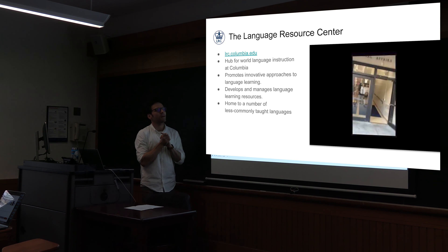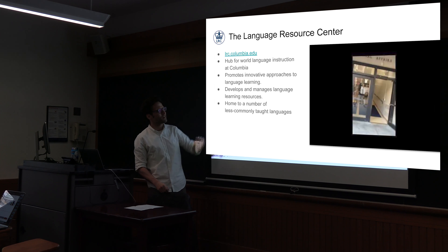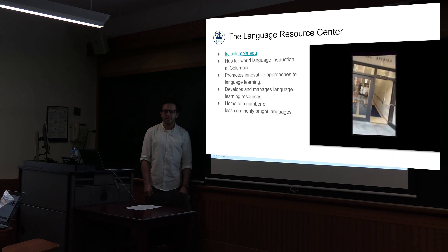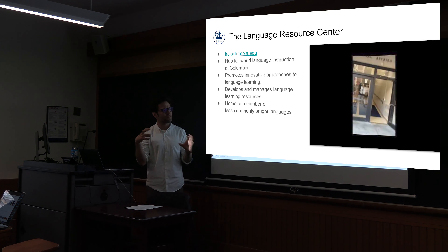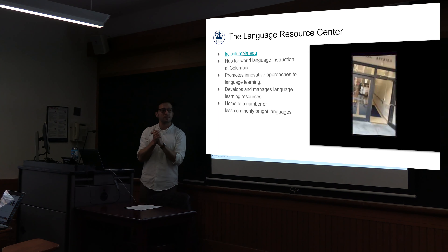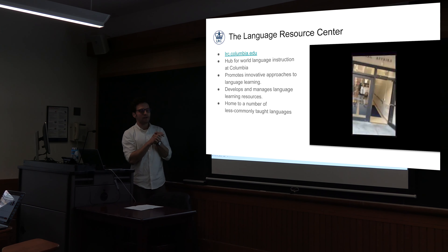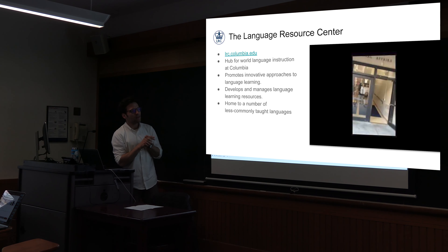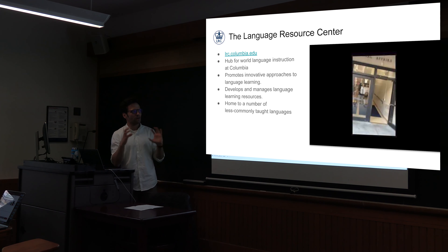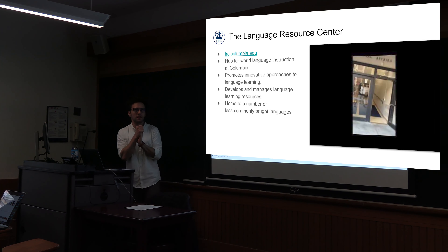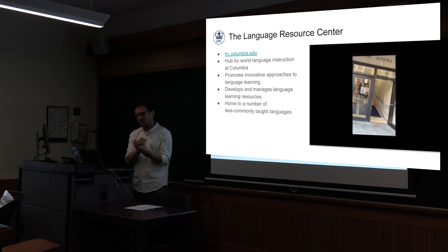Our URL is lrccolumbia.edu. You guys are completely fine not knowing we exist because we are hidden very deep underground in the School of International and Public Affairs building. We are a hub for language instruction at Columbia — there are 50 foreign languages offered here. Many of those are less commonly taught languages such as Welsh, Swahili, Romanian, and Finnish. We help with instructional design, materials development, and curricular consultations. We have a bunch of resources for all these languages that we design, promote, and manage.